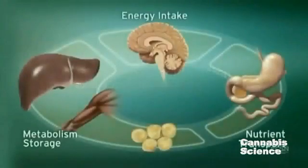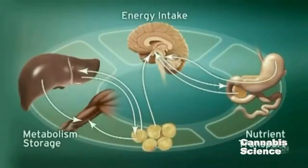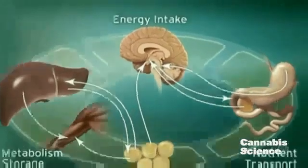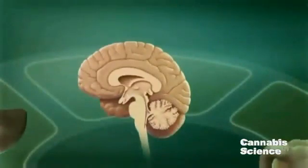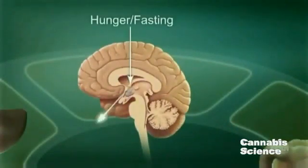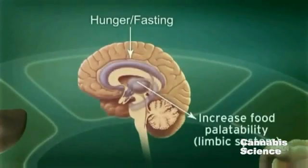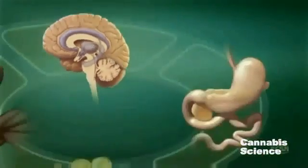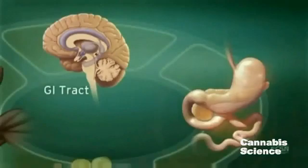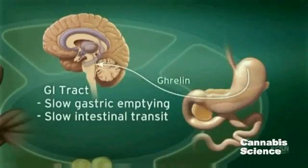Endocannabinoid system activity in the central nervous system regulates food intake. For example, ECS stimulation by hunger and fasting signals stimulates appetite and increases the palatability of food. Endocannabinoids slow gastric emptying and GI transit and appear to stimulate secretion of ghrelin, a neuropeptide that increases appetite and food intake.